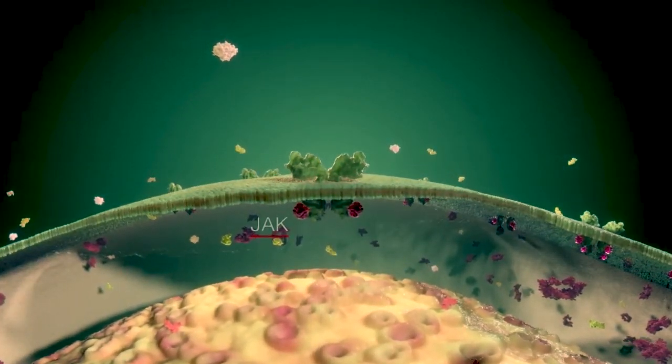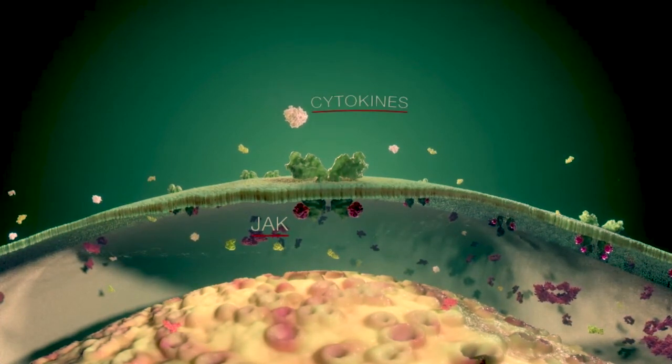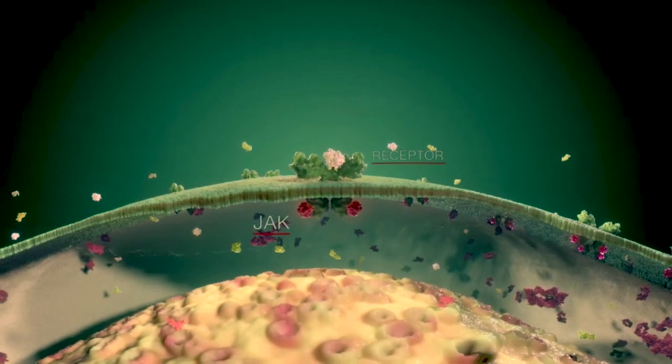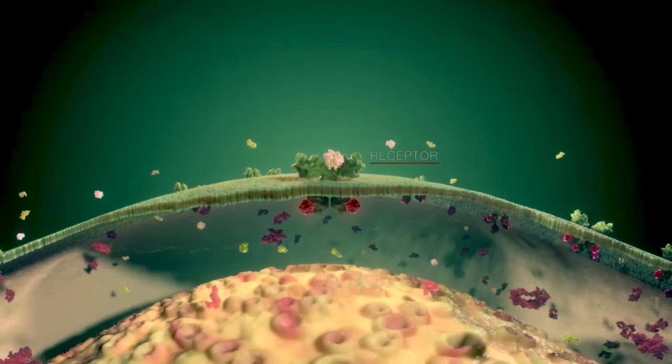JAK1, JAK2, JAK3, and tyrosine kinase 2. The binding of cytokines to cell surface receptors leads to dimerization, causing phosphorylation and activation of JAK proteins.